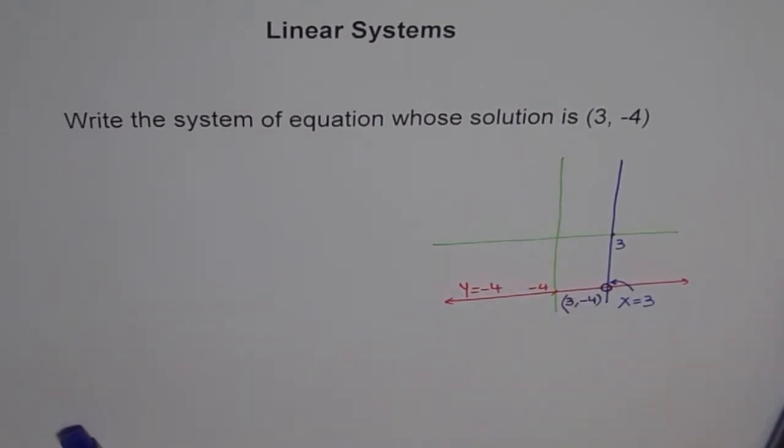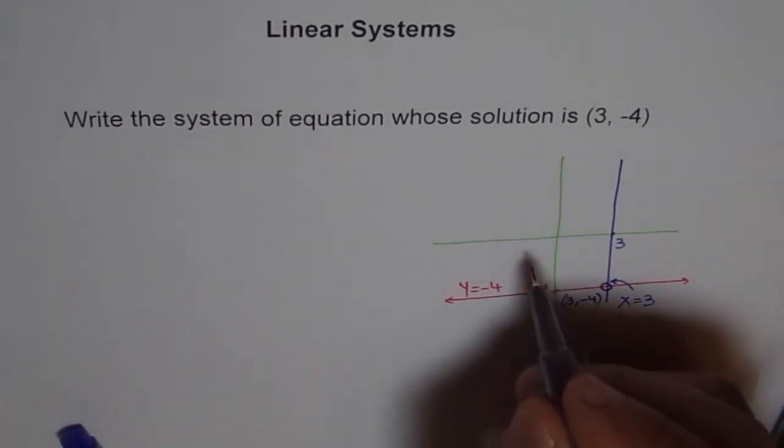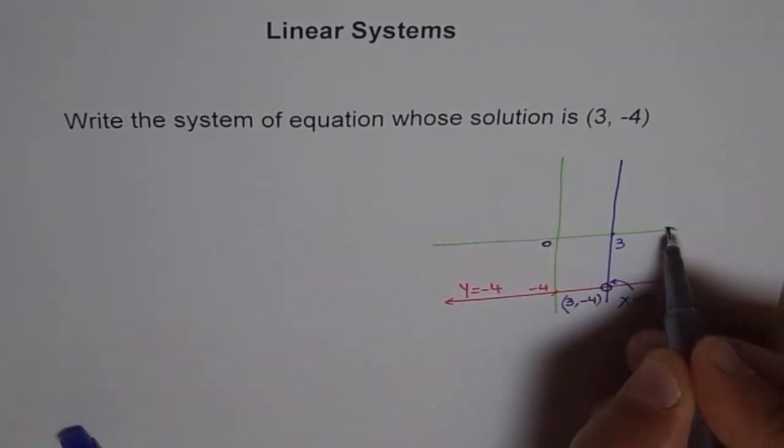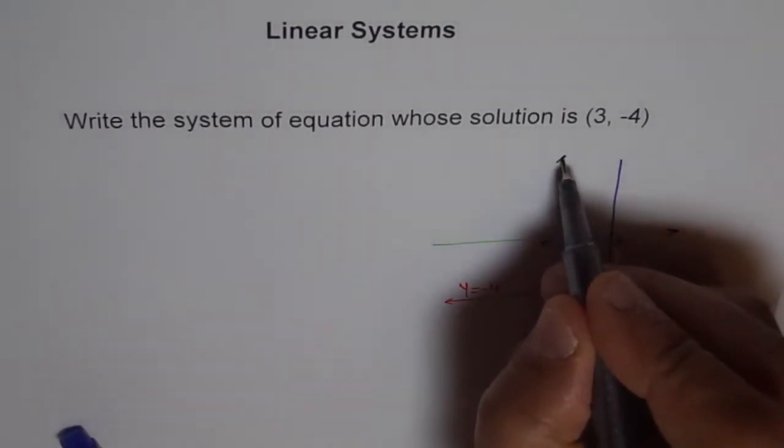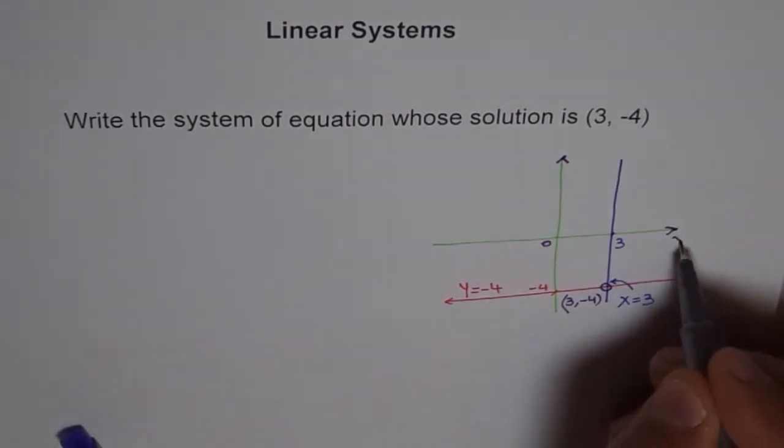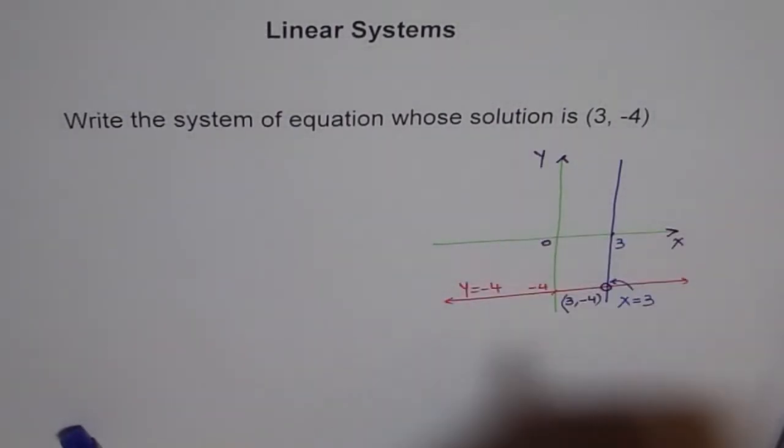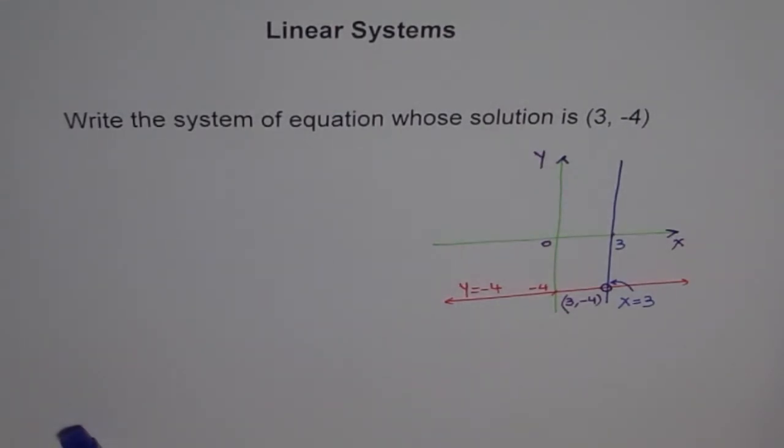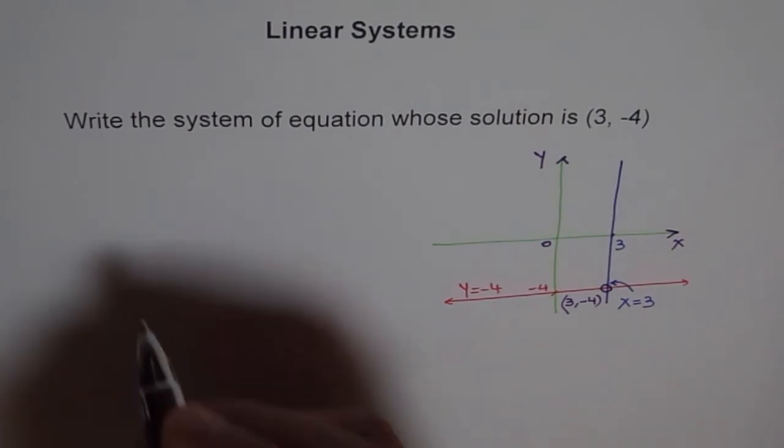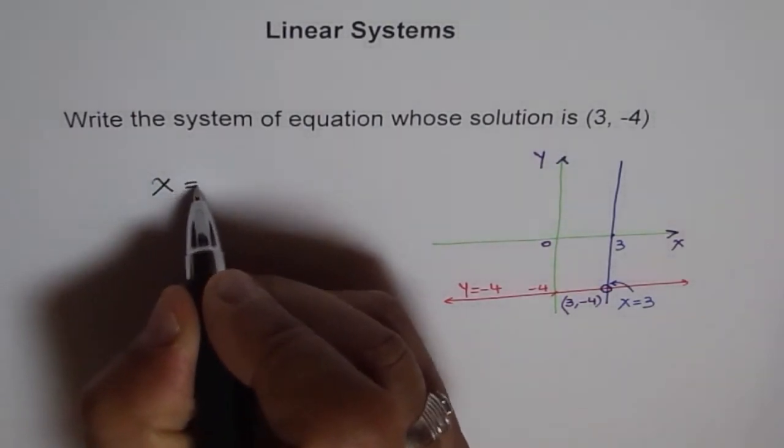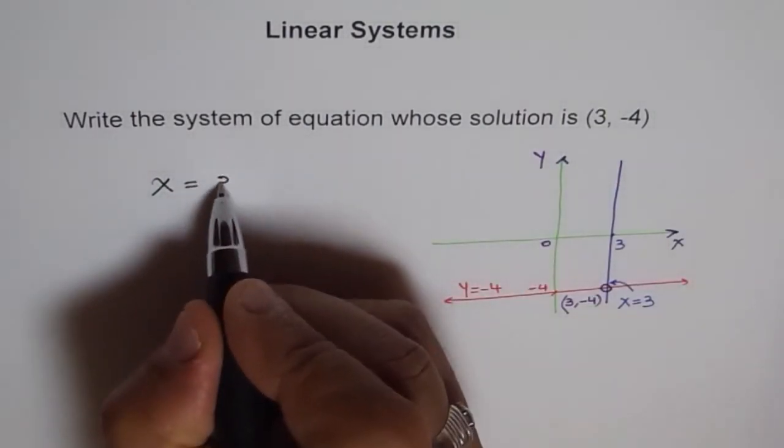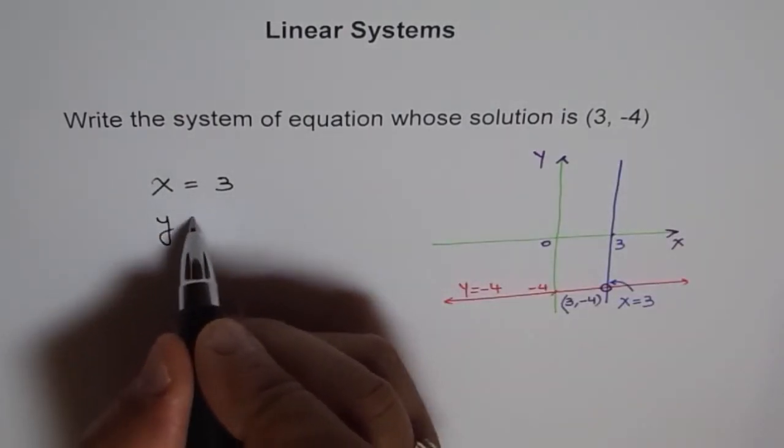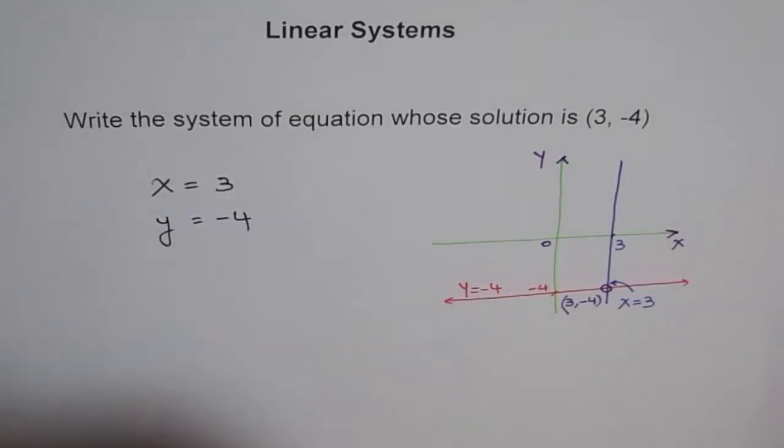This probably is the best solution for this kind of problem. Without wasting much time, we could always get to this. Therefore, our system of equations whose solution is (3, -4) is x equals 3 and y equals minus 4. That's what it is.